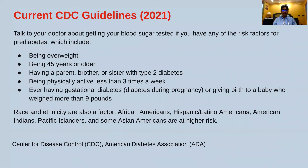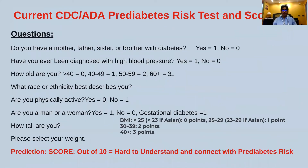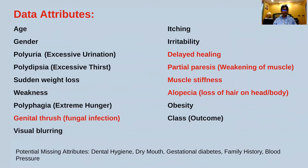Here are the current CDC guidelines for pre-diabetes in 2021, including their pre-diabetes risk test and scoring — but it's hard to understand and not very accurate. Here are some parameters in my model. The ones in red are the ones identified in other studies. This is the only study to have parameters based solely on behavioral and physical attributes.